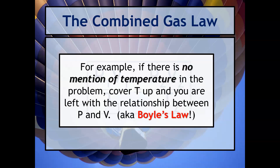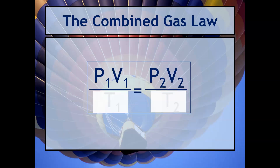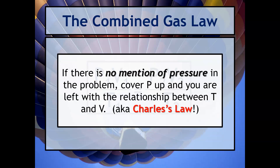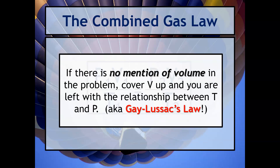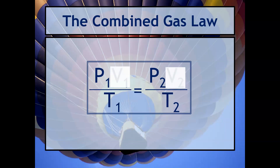You can get the law you need by covering up the variable that is not mentioned in the problem — the variable held constant. For example, if there's no mention of temperature, cover up temperature and that gives you Boyle's law. If there's no mention of pressure, cover the P's and that is Charles's law. And if there's no mention of volume, cover volume up and that's Gay-Lussac's law.